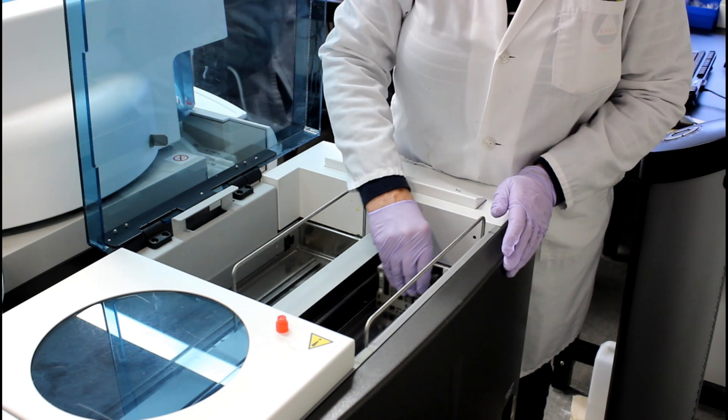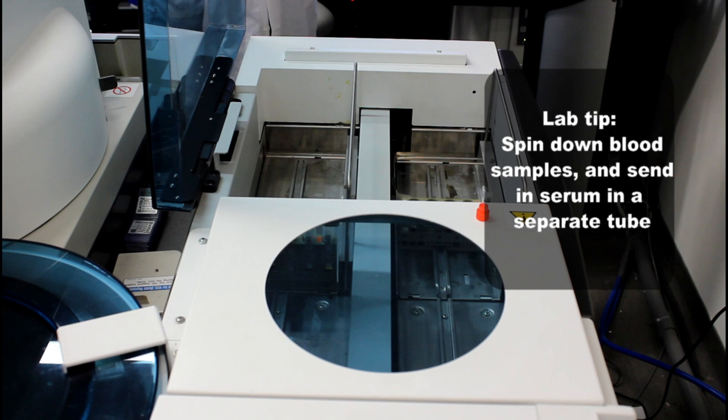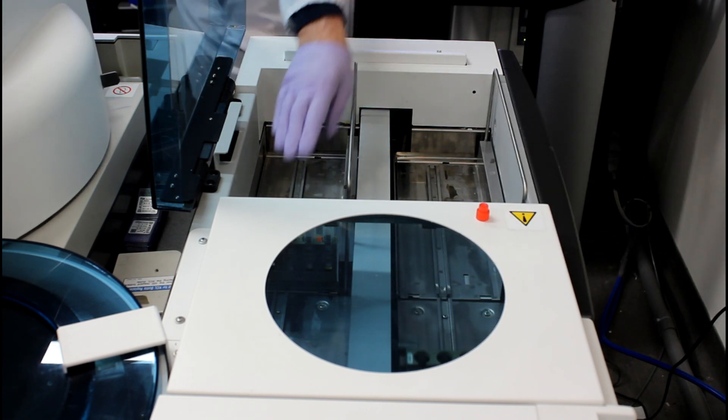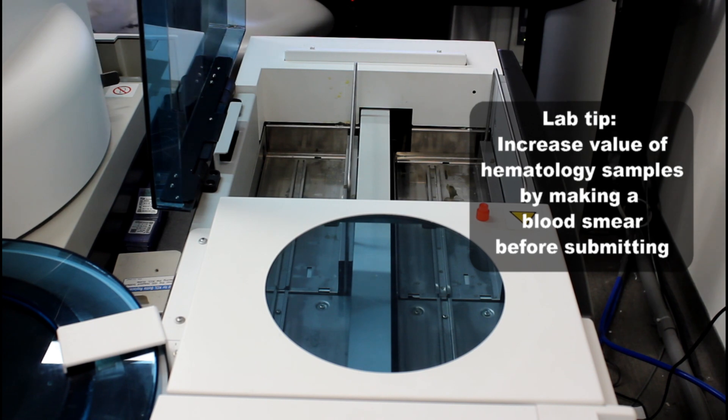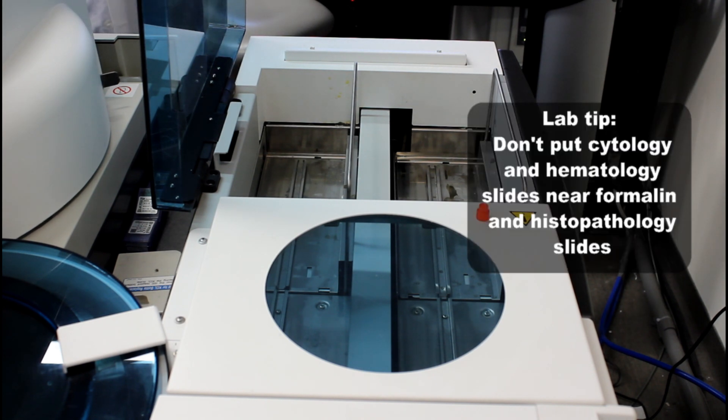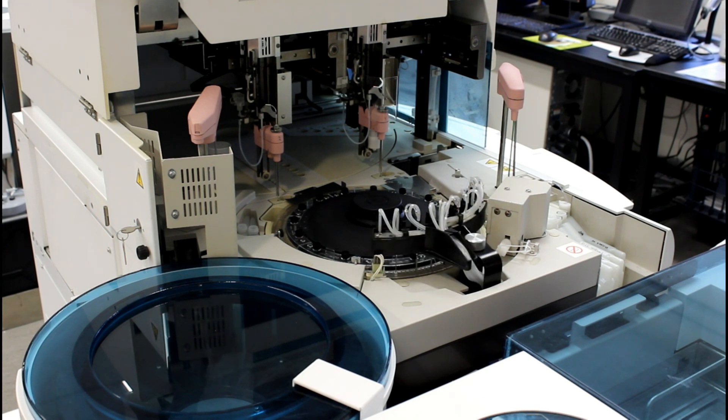One quick tip to remember is with whole blood samples to spin down your blood and send in serum in a separate tube. Additionally, you can increase the value of your hematology samples by creating a blood smear before submitting. Another tip is to not put cytology and hematology slides near formalin and histopathology slides. They can be fixed and rendered not useful. Send them in separate containers.